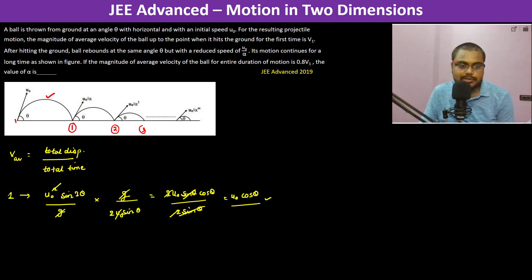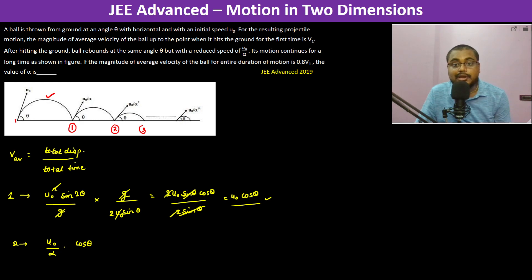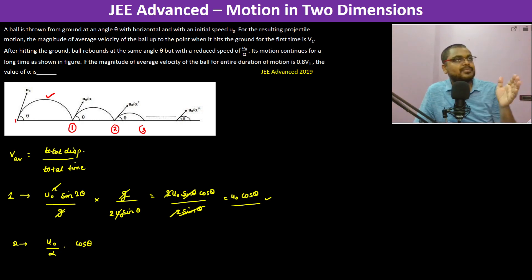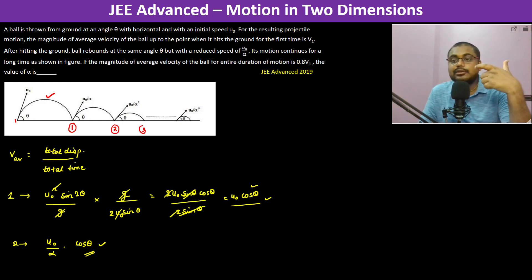For the first flight the average velocity is U₀ cosθ, and for the second flight — after the first bounce — the speed is U₀ divided by alpha, so its average velocity becomes (U₀/alpha) cosθ. But now we don't have to calculate for each individual bounce separately; we have to calculate for all bounces together over the entire duration of motion.